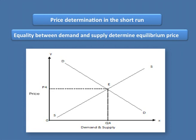Now we understand price determination in the short run. The total demand and total supply of the product — specifically the equality between these two — determines the equilibrium price, where DD is the demand line and SS is the supply line. They intersect at point E, which is the equilibrium or market clearing point. At this point demand equals supply, there is no excess supply and no shortage of the commodity. So P4 is the equilibrium price, determined by the industry. Individual business firms have no role to play in the determination of price.